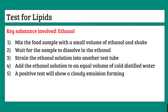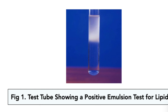A cloudy emulsion looks like a foggy, milky texture inside the solution, as shown in the image. This one might be a bit harder to remember than the others, but as long as you remember 'cloudy emulsion' and that you need to use ethanol, you'll be fine.